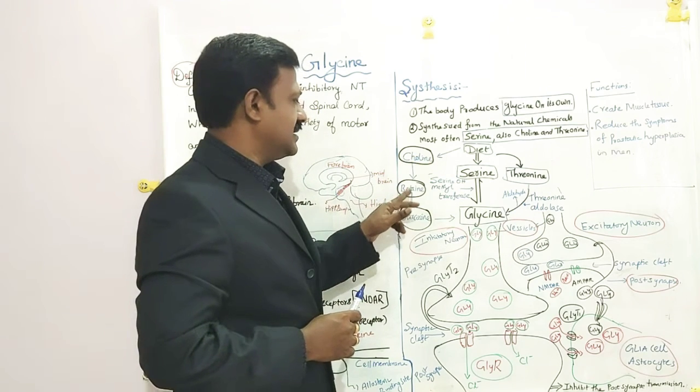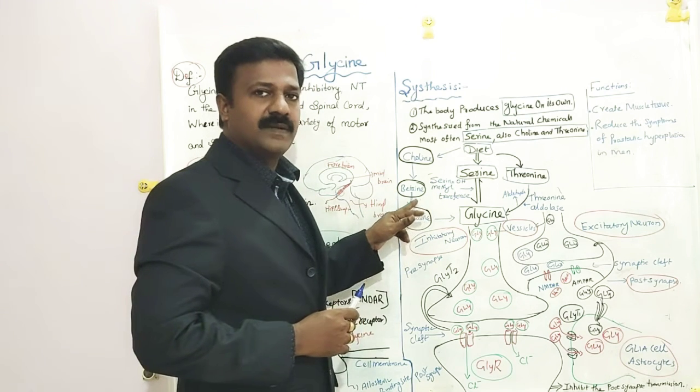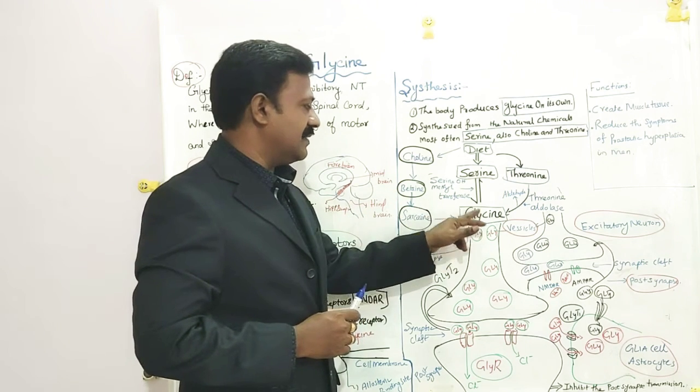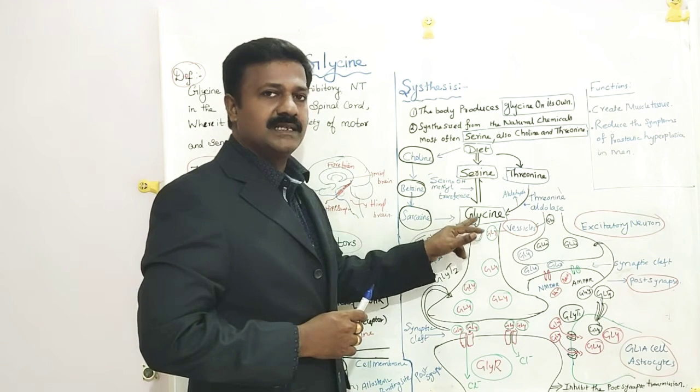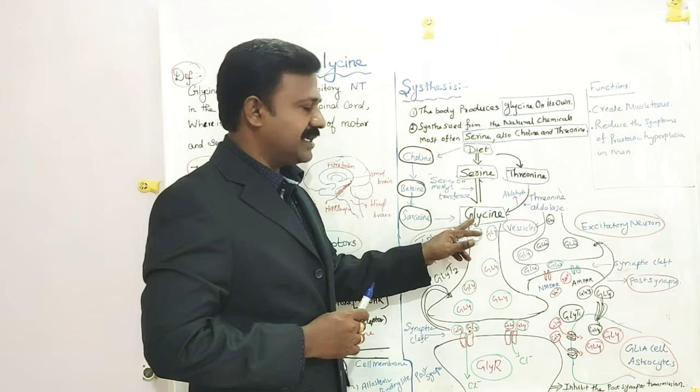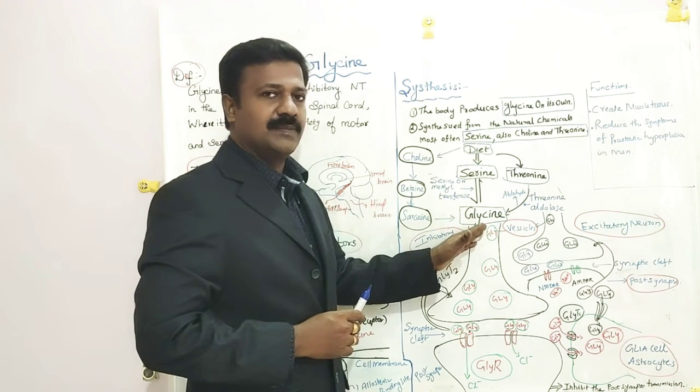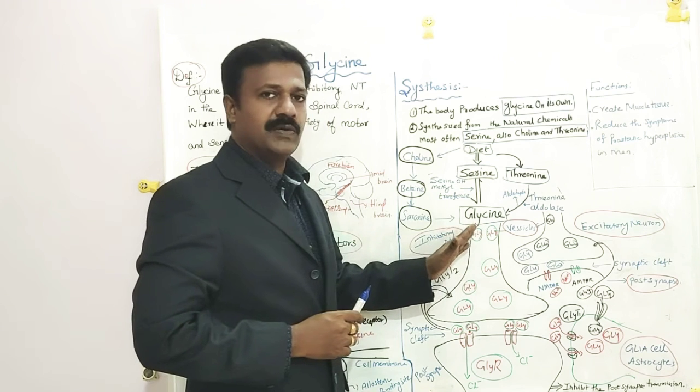And Choline is converted into Betaine. From the Betaine to Sarcosine. From Sarcosine, they are later on synthesized into Glycine. So once synthesized, the Glycine neurotransmitter is stored in the vesicles present in the presynaptic neuron.